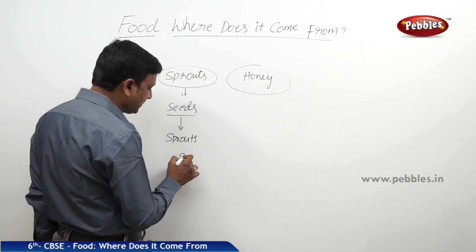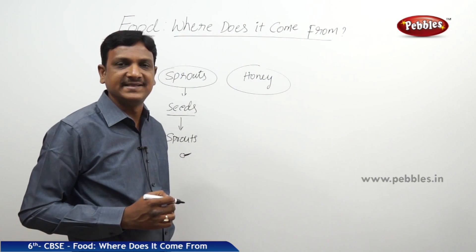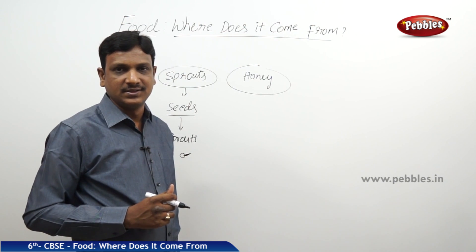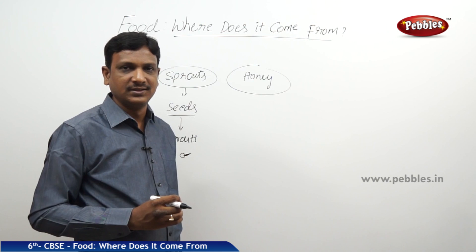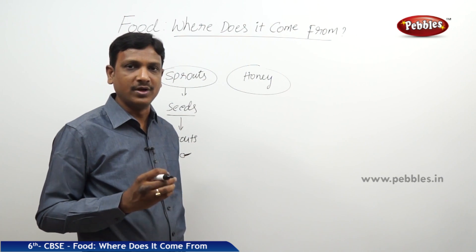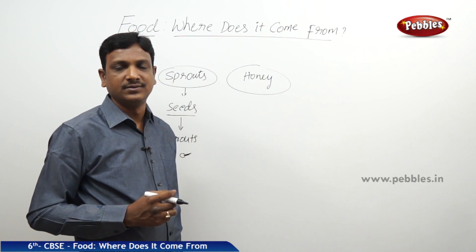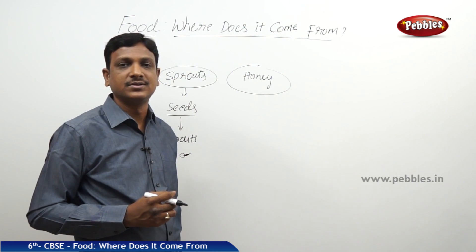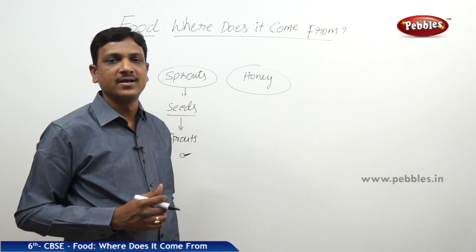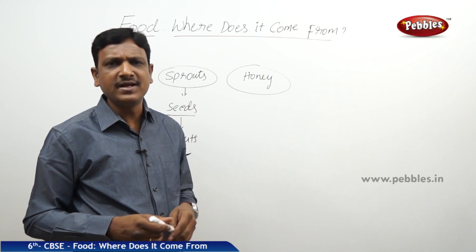A sprout is a seed which has given out a baby root. Moong dal and chana are generally used to make sprouts. Sprouts are very nutritious — they contain plenty of amino acids and vitamins that help with body building and good health. So it is advisable to eat sprouts. You get sprouts by soaking seeds in water; they have very good nutritive value.